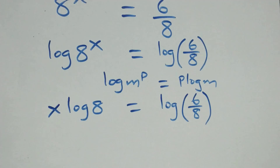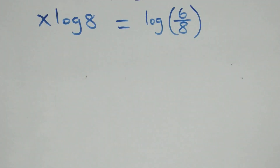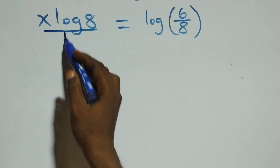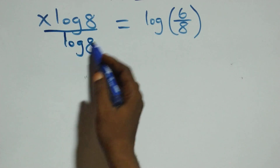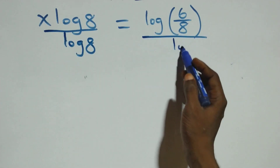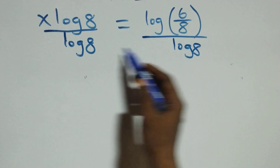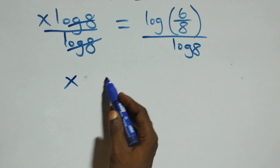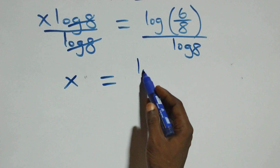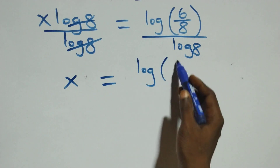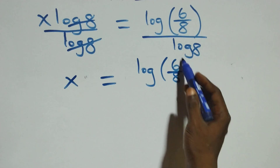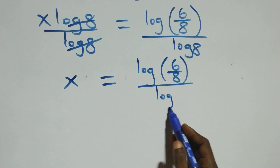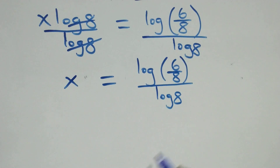The next step: we divide both sides by log 8. That is, divide this side by log 8 and also divide this side by log 8, which implies log 8 cancels each other and we have x left, which equals log 6 over 8, divided by log 8.